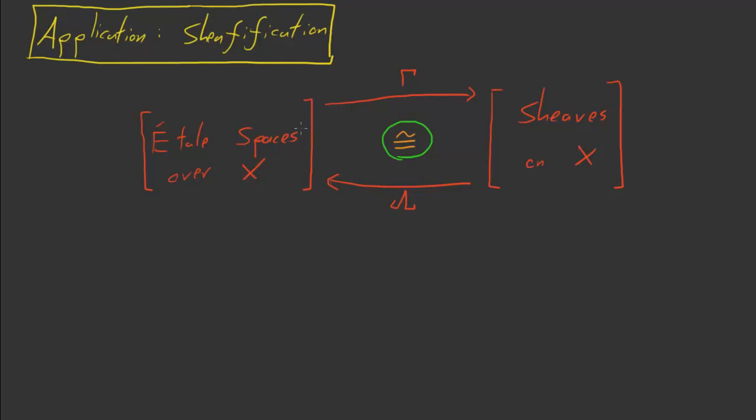So equivalences of categories are nice because they give us a new perspective on some category that we care about. And maybe by itself that doesn't mean very much - maybe we've constructed some new perspective, but it isn't good for anything. You can always construct some perspective; there's no guarantee that it'll be useful.